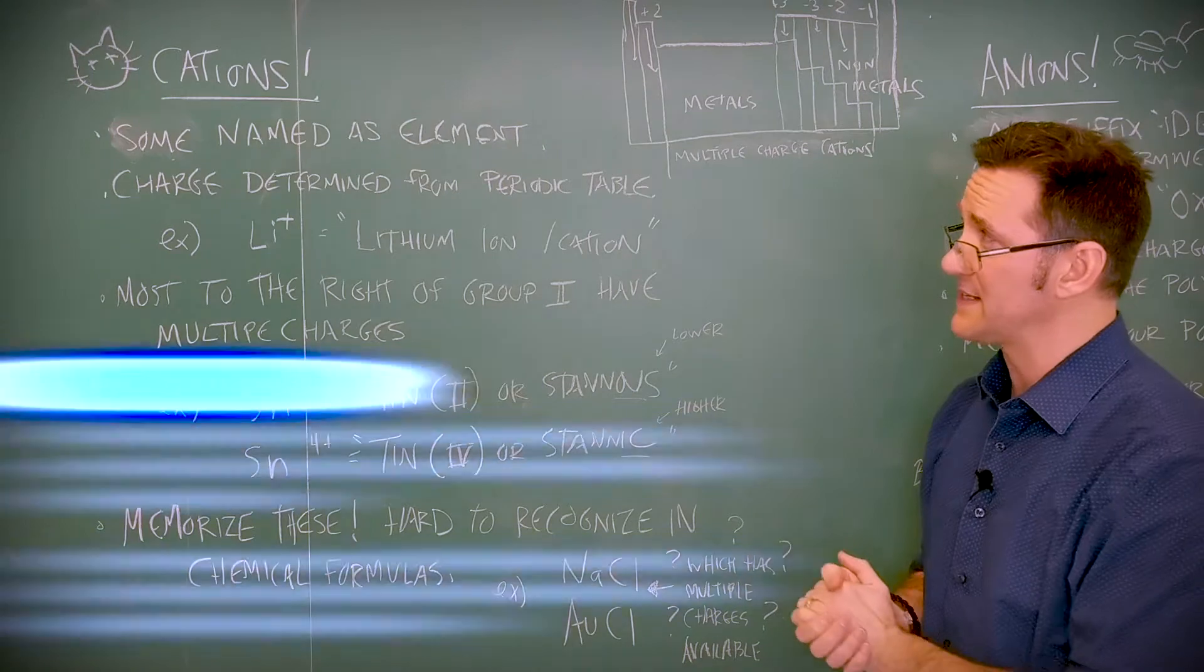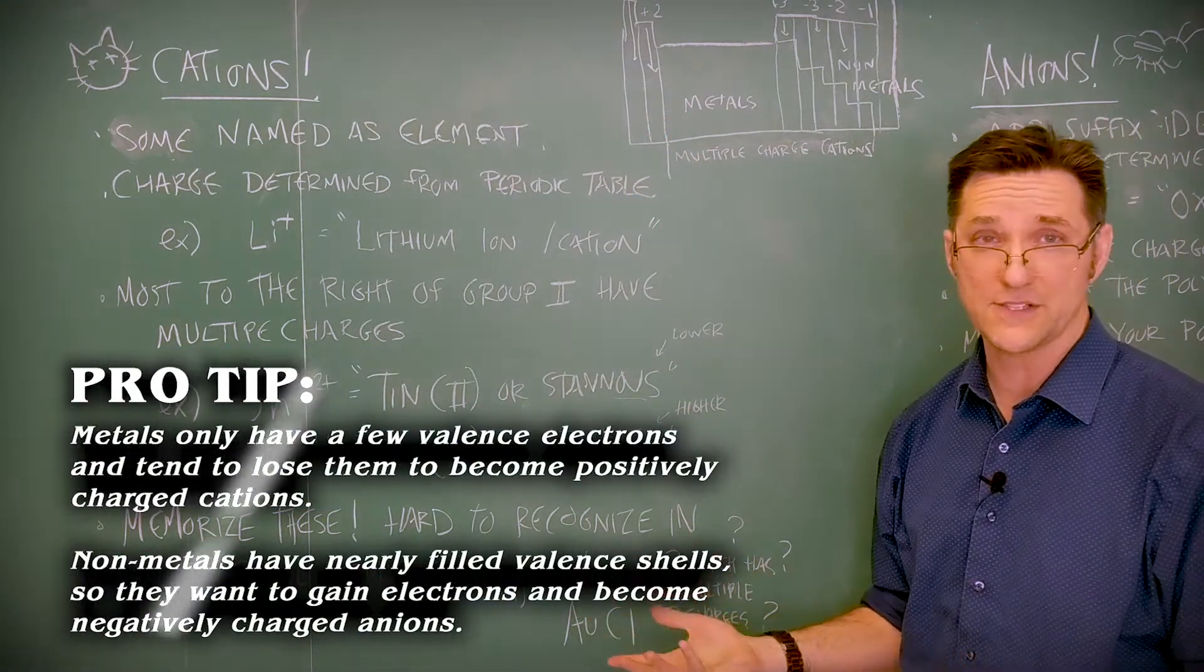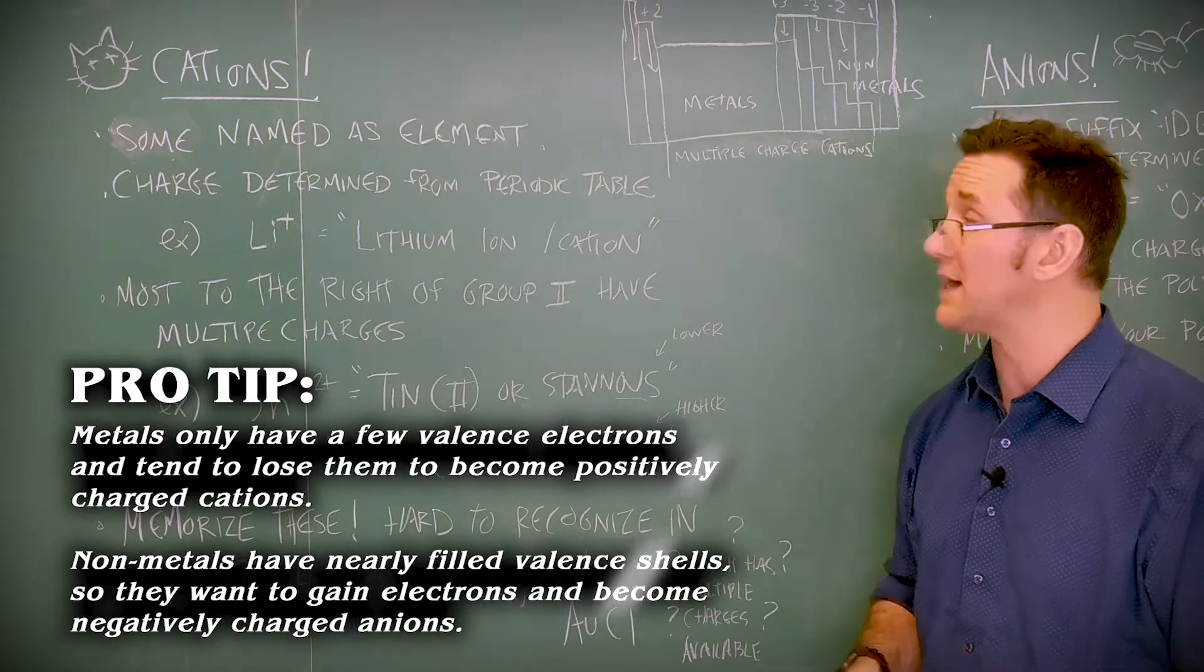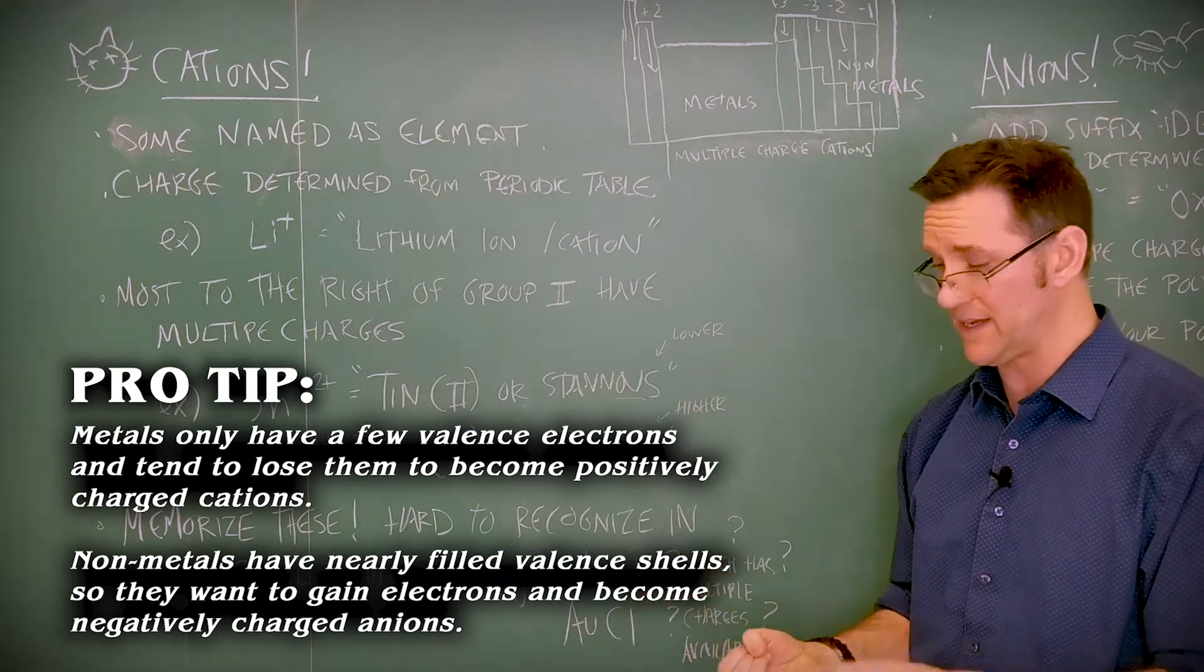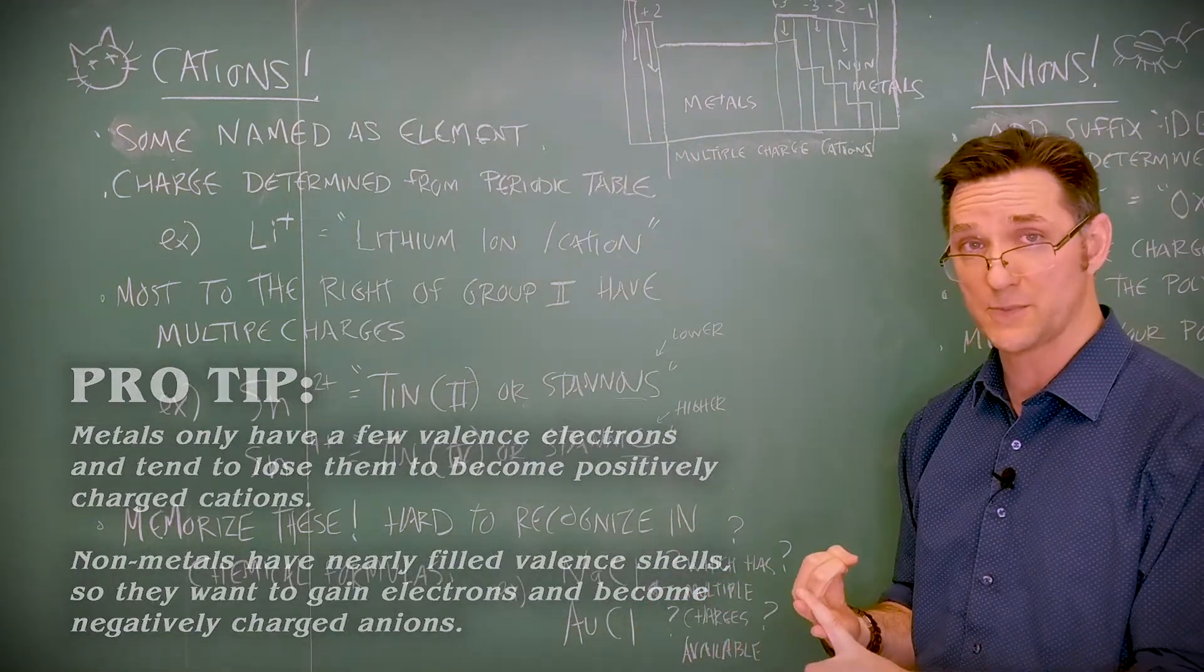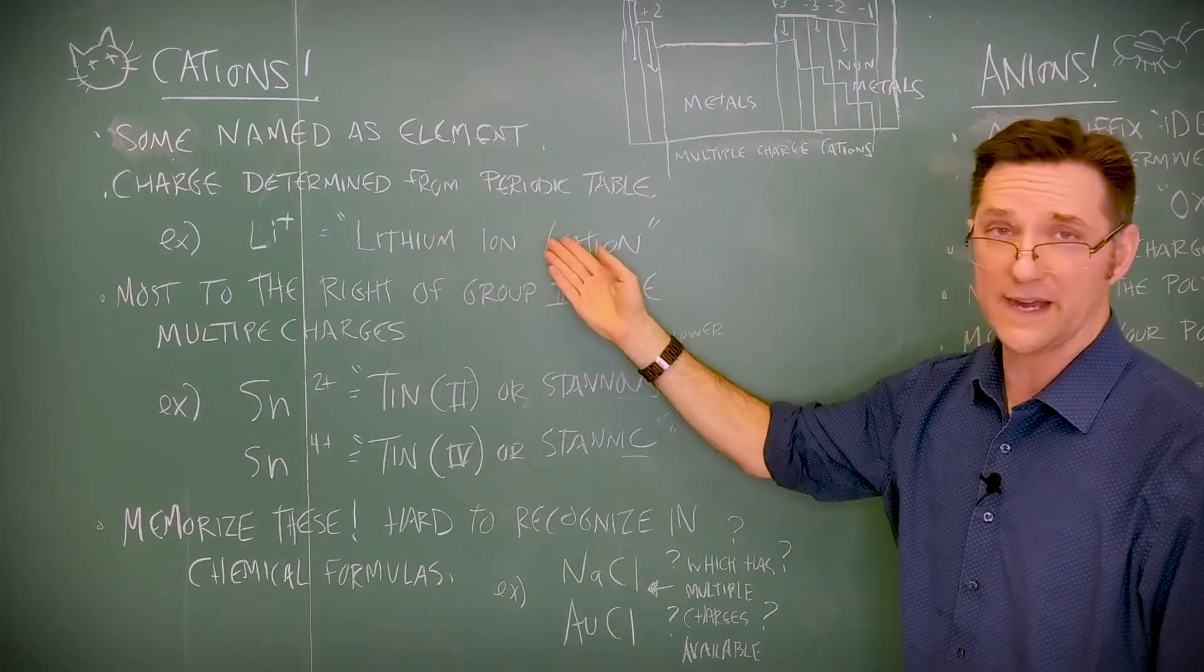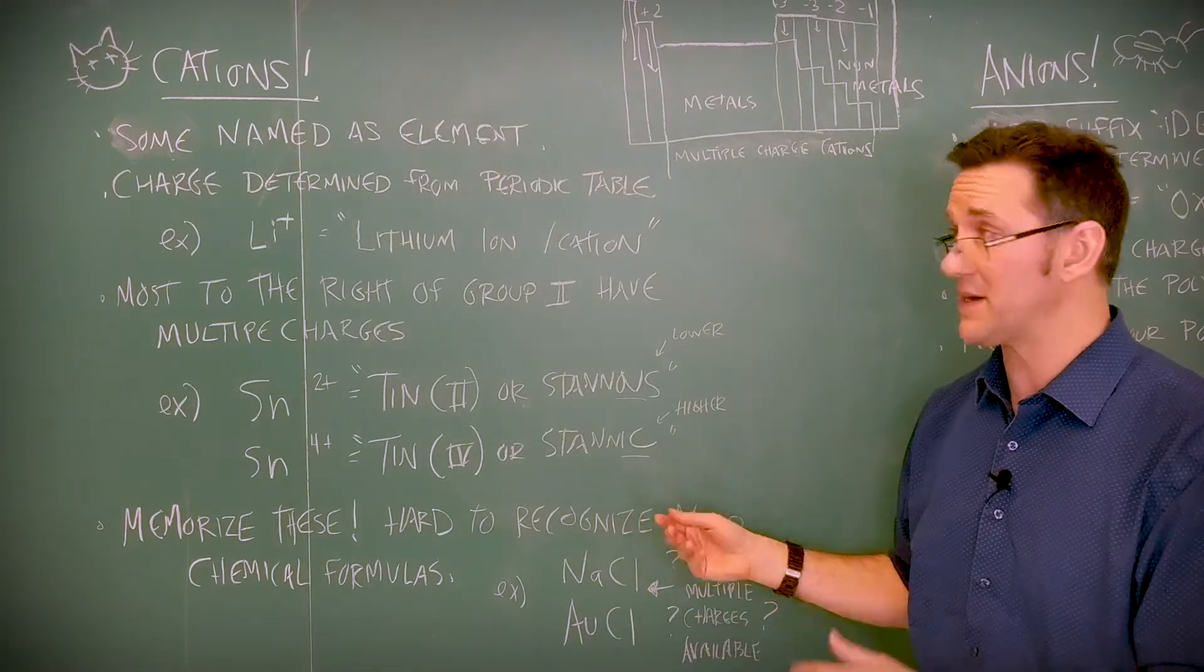I would say 75% of the problems people have with nomenclature just comes down to not using their ions correctly. So with your cations, some of them you don't have to memorize. The first two families, you don't have to worry about what their charge is. You can figure that out from the periodic table.